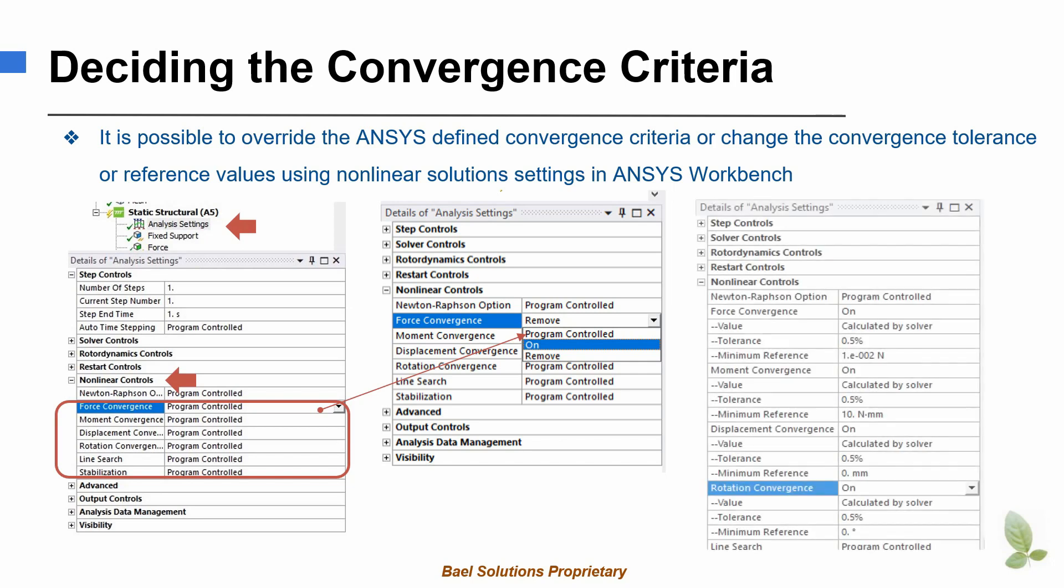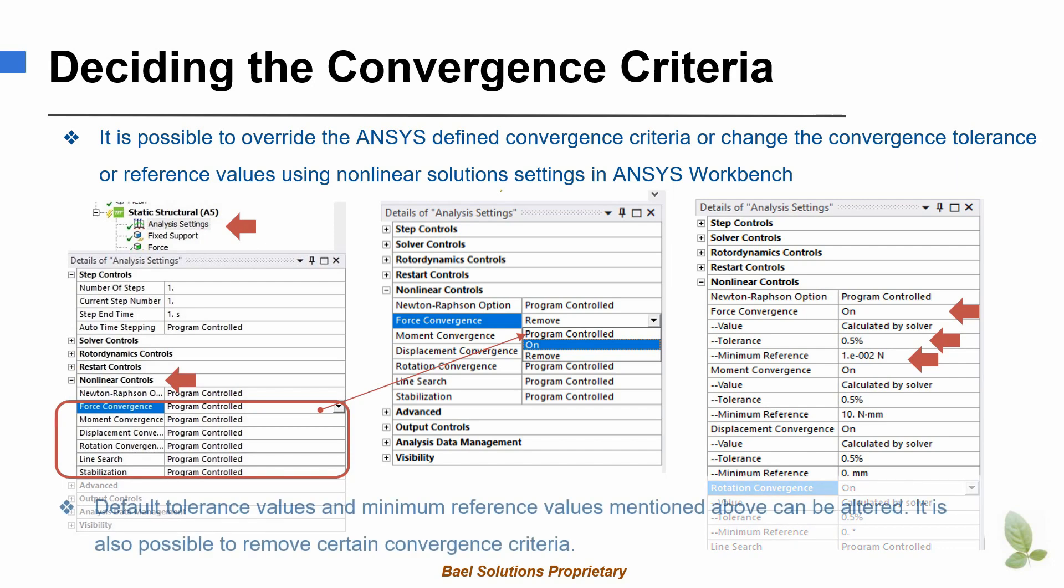Users can manually set certain criteria on or remove certain criteria. If we set certain criteria to on, tolerance and the reference value can be seen or changed as per the user requirement. Although tolerance or reference value can be altered to improve the convergence, it is not recommended as it may reduce the accuracy of the solution.